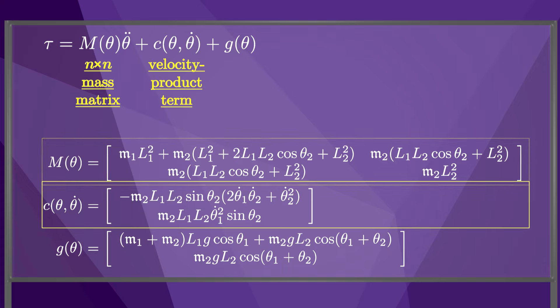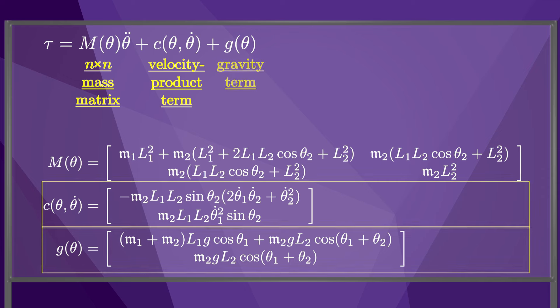We call the vector c a velocity product term, since it is composed of terms with θᵢ squared or a θᵢ times θⱼ in it. Finally, we call the vector g the gravity term, since it depends on gravity. We call this a gravity term under the assumption that the potential energy comes only from gravity, but if there were springs at the robot joints, those springs would also contribute to the potential energy, and therefore to g(θ).